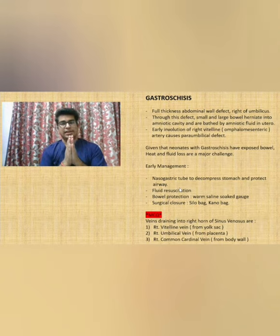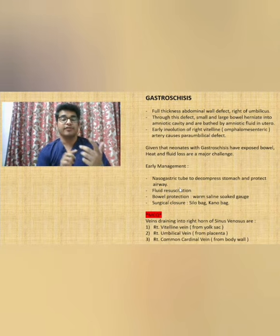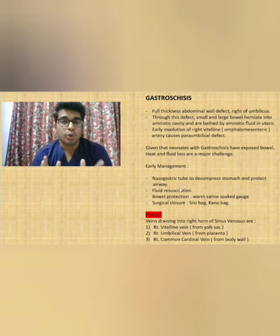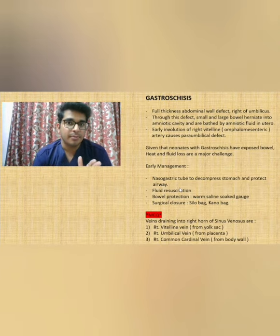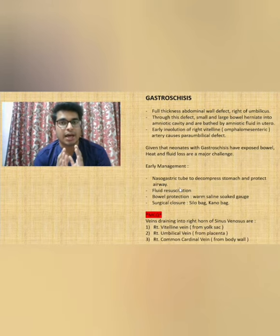In Gastroschisis, there is no sac covering, unlike in Omphalocele where the defect is covered by a sac. Our main goal is to protect the bowel loops. As a temporary measure before surgical management, a saline-soaked gauze is placed over the bowel loops before the actual surgical correction is performed.